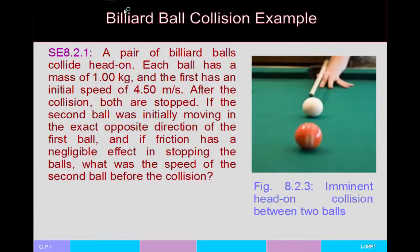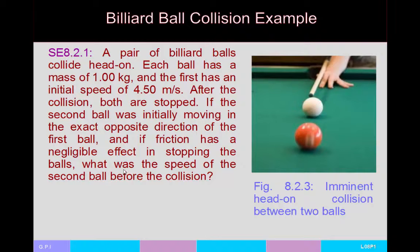Let's look at an example of a perfectly inelastic collision. There's a trick shot in billiards where a ball is moving towards your cue ball, the two collide head-on, and both come to a stop. Suppose the first ball has an initial speed of 1.5 meters per second. What speed do you need to give the cue ball to get the collision in which both come to a stop? How do you do that?